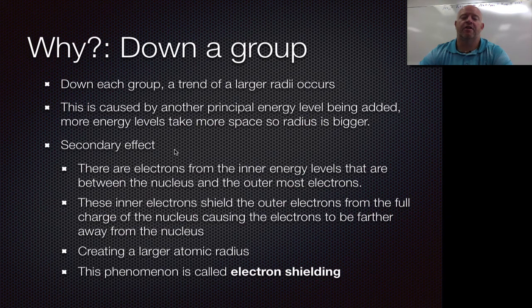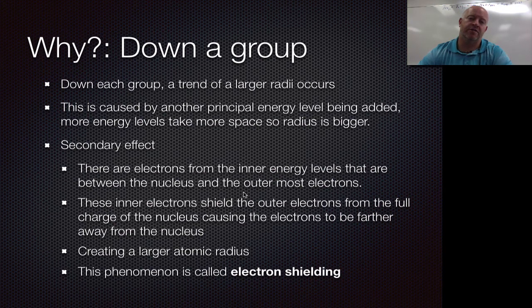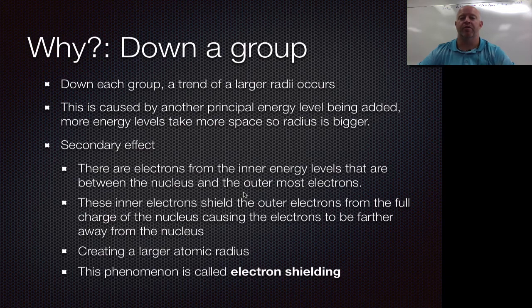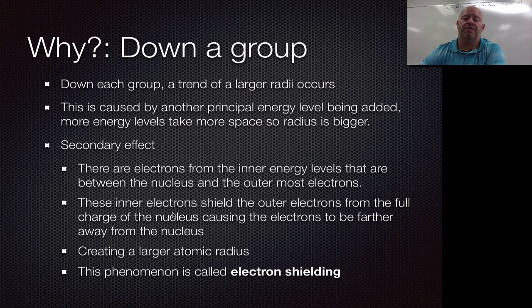There is also a secondary effect called electron shielding. As you get more and more electrons on the inner levels, the outer electrons feel those inner electrons. Because both are negatively charged, they repel each other — the inner electrons actually push the outer electrons further away. As a result, the nucleus can't hold on to them as well and the whole atom gets bigger overall. So going down a group, the primary reason is electrons being placed at higher energy levels; the secondary effect is electron shielding, where inner electrons push the outer electrons even further away.